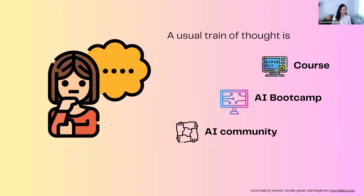Let's say we want to learn AI. An initial train of thought is: I need to learn about this topic because I don't want to be left behind or I want to get involved in this revolution. So the next thing you do is sign up for a course and embark on a learning journey. But what ends up happening most of the time is that we end up collecting many unfinished online courses, due to multiple occupations and many obstacles in the way.